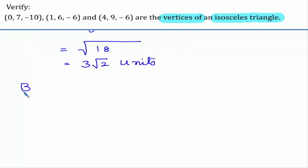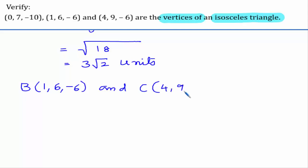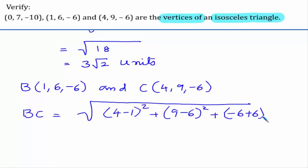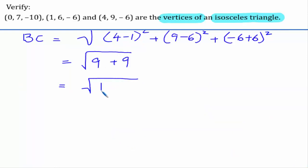Now let us consider B as (1, 6, -6) and C as (4, 9, -6) and find distance BC. We compute (4 minus 1) whole square plus (9 minus 6) whole square plus (minus 6 plus 6) whole square. Here: 3 whole square is 9; 3 whole square is also 9; and this is 0. So we get square root of 18, which is 3 root 2 units.